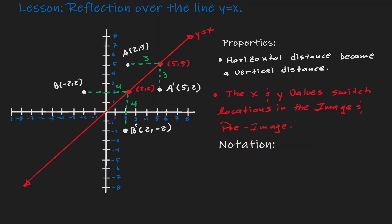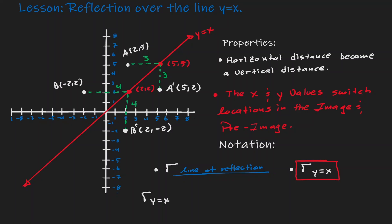When it comes to reflection, the notation we can use is a lowercase r. The notation to reflect over the line y equals x is lowercase r with y equals x as a subscript. We can also use function notation to represent this relationship. We can say there is a function whose name is r sub y equals x, and if a coordinate point x comma y is the pre-image, then the image is when the x and y values switch places, giving us y comma x.